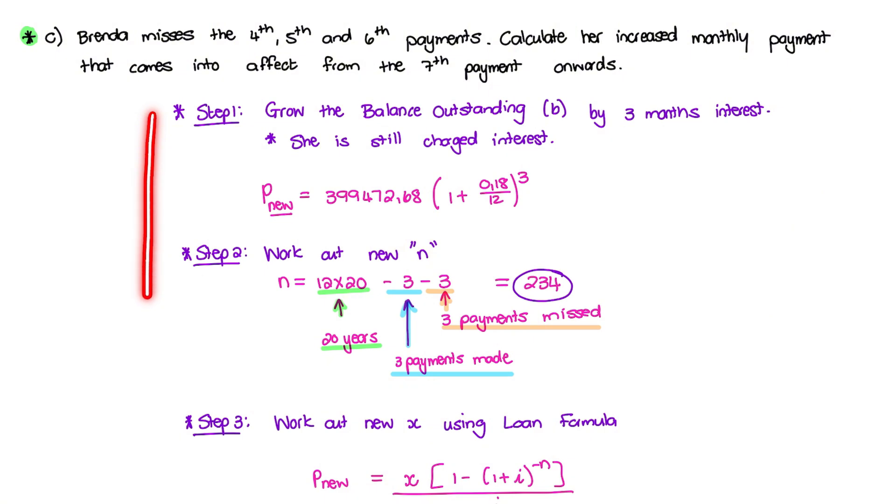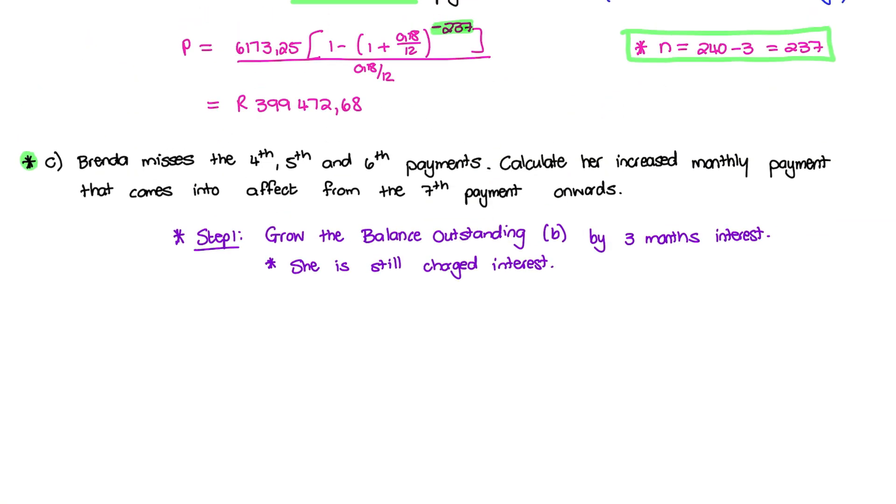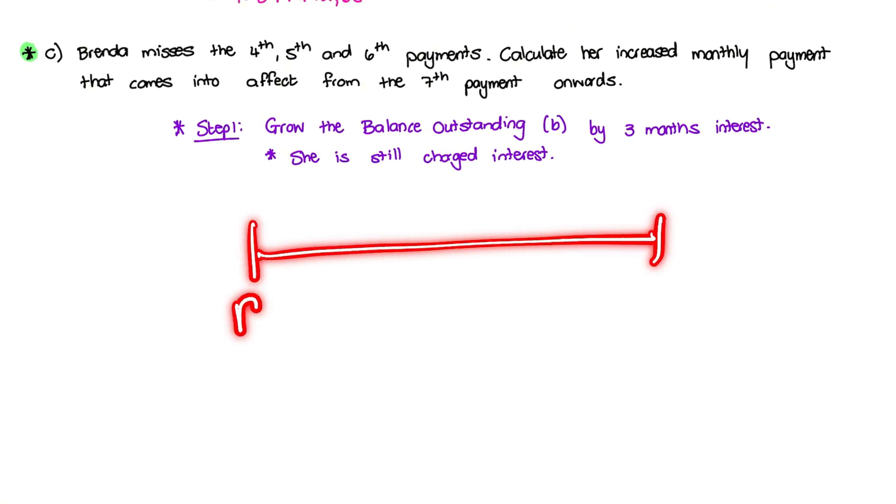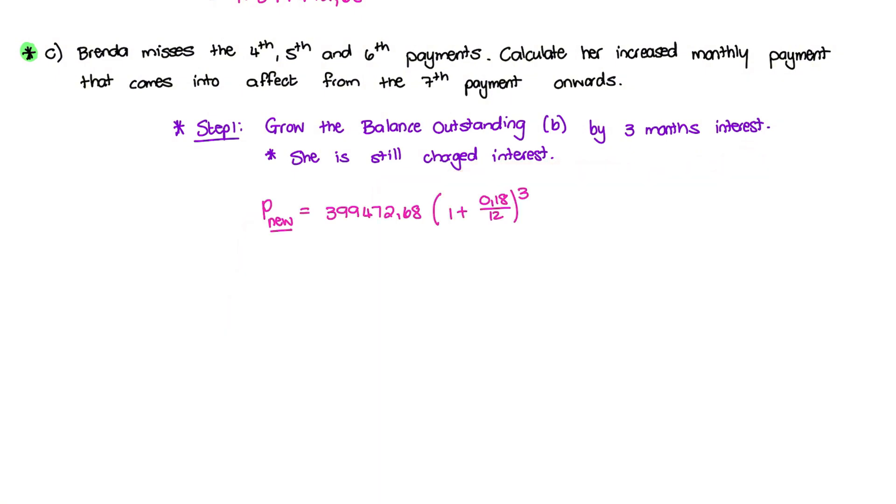Okay, for this solution, we have a few steps that we are going to talk about. The first step, we want to grow the balance outstanding that we found in the previous question by three months. So if I draw a little timeline, we worked out this outstanding balance at three months. Then we miss payment four, five and six. And on the seventh month, we will retake payments. So if we have this balance outstanding here, we will be charged interest for those three months that we have missed. So I take the balance outstanding from the previous question. And I charge myself with three months of interest because that represents the three months or three payments that we have missed.